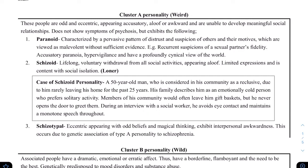Cluster A personality consists of the weird, odd, eccentric type people. There are three types. First is the paranoid type — these people are always suspicious about others, suspicious about their partner, and even when they go to a supermarket they wonder if they got the correct change. They are always paranoid about situations and most will have a profound cynical view of the world, believing everyone is trying to trick others. They are always vigilant.